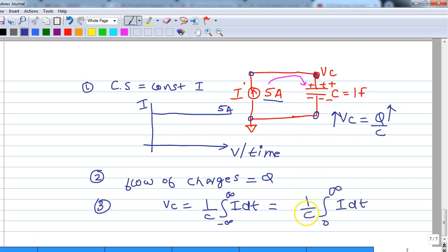So if you notice, 1 by C is a constant value and it will just scale down the voltage. Let us only worry about this integration part. The other way to look at this integration is nothing but area under the curve.